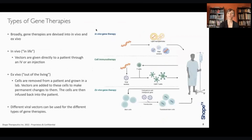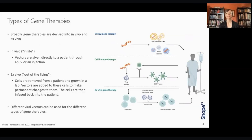There are different common types of gene therapy approaches. Broadly, these can be classified as in vivo gene therapy or ex vivo gene therapies. In in vivo gene therapy, vectors are delivered directly to the patient — through an IV or injected directly into the tissue most affected by the disease. For ex vivo gene therapy, we remove cells from the patient and modify them in a dish in a laboratory. These modifications make permanent changes to cells that are then grown up in large quantities and infused back into the patient. Different viral vectors are going to be better for either in vivo or ex vivo therapies.